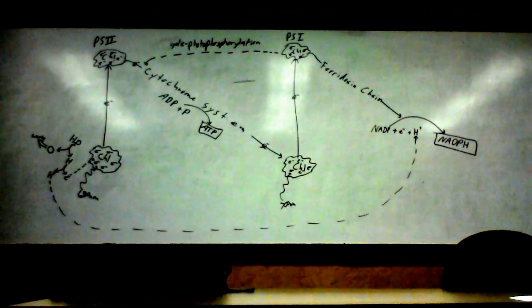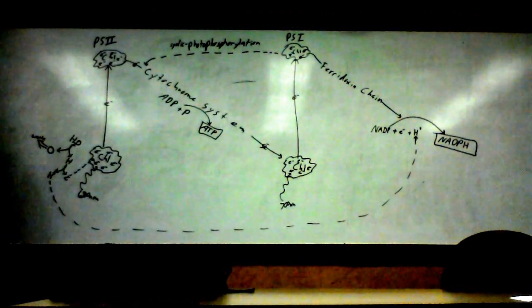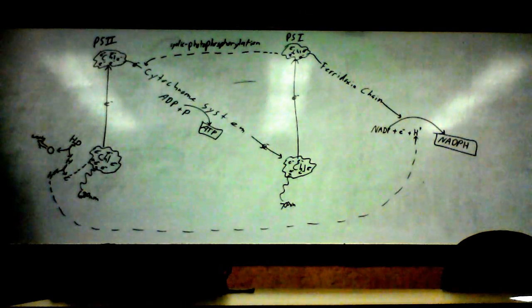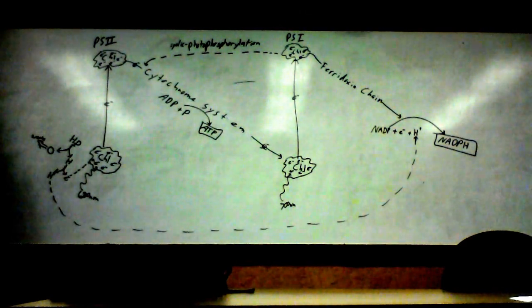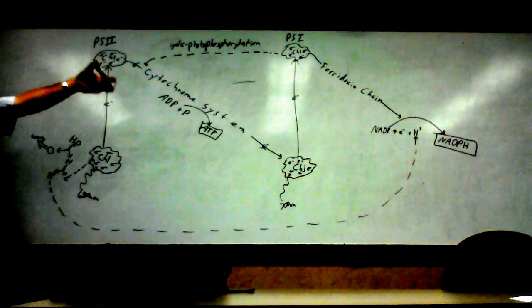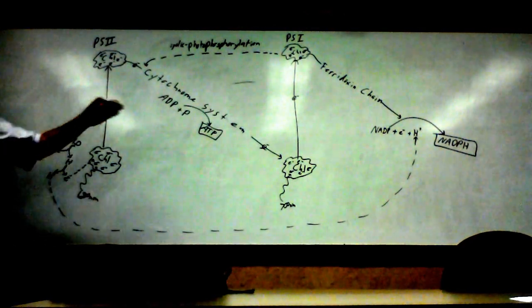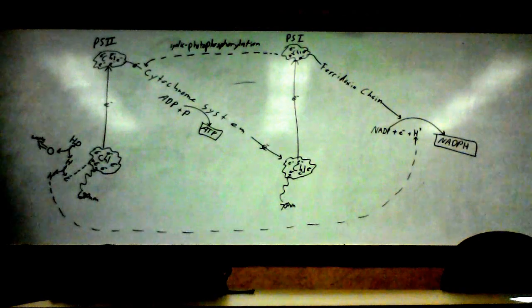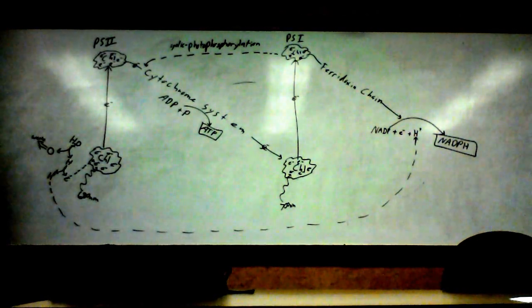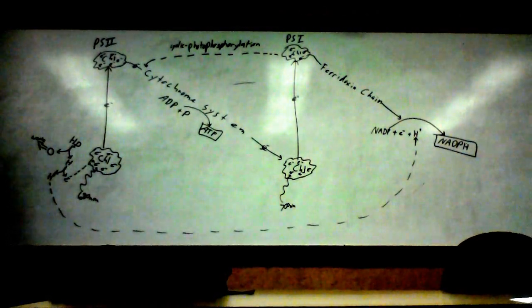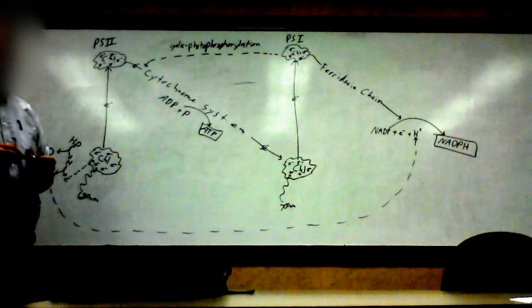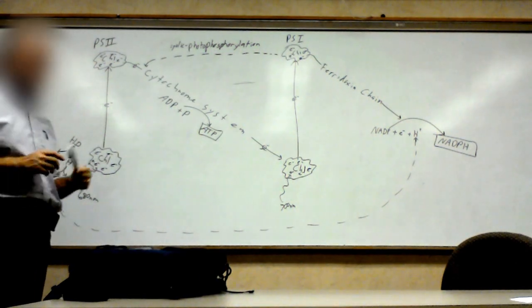All right, questions, comments, issues? Yes? So basically without the paradoxic chain, it's a cycle. If we start at photosystem I and end at photosystem I, that's the cyclic part. If we start in II and go to I and then out, that's non-cyclic. Yes? Yep, cyclic and non-cyclic photophosphorylation.